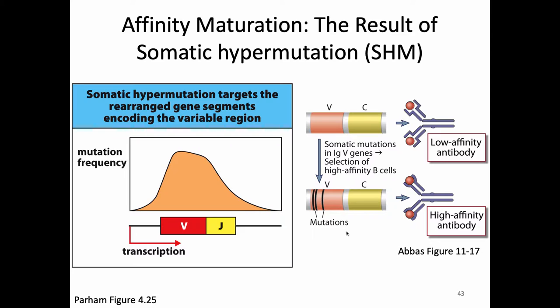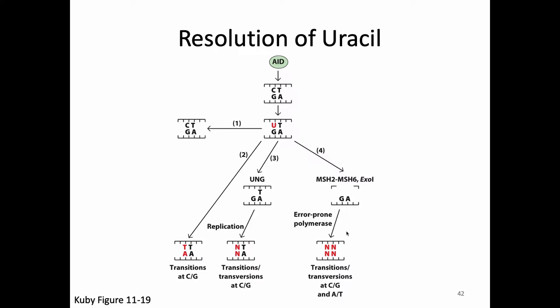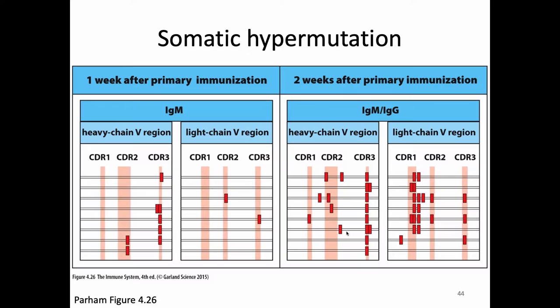AID acts on the cytosines in the variable region of the light chain VJ region as well as the VDJ of the heavy chain, leading to point mutations where those cytosines get changed to uracils. Once we have uracils, they become single base-pair mutations — they might become T-As or something else because of these repair processes. We specifically see AID hitting the CDR regions of both the heavy chain and the light chain, deaminating cytosines at those regions and generating random kinds of mutations depending on what base pair gets inserted.